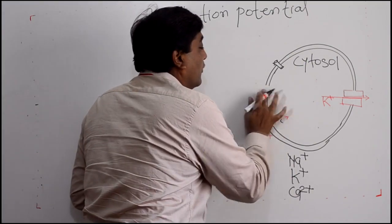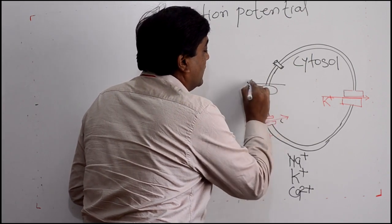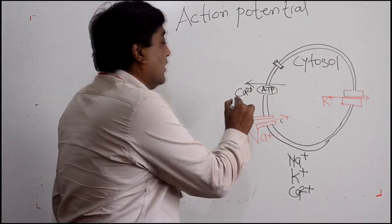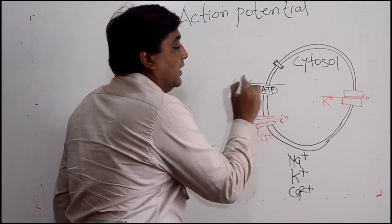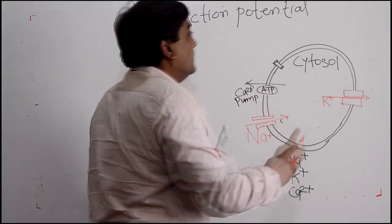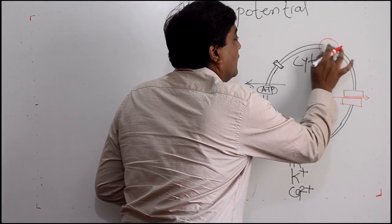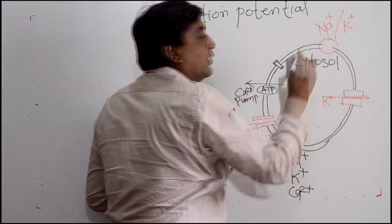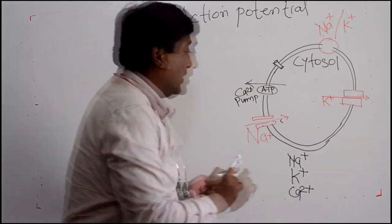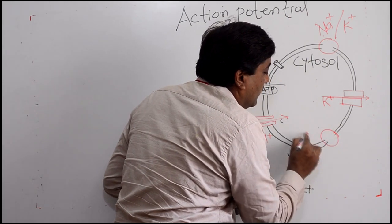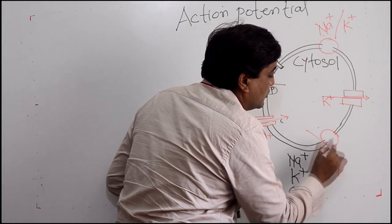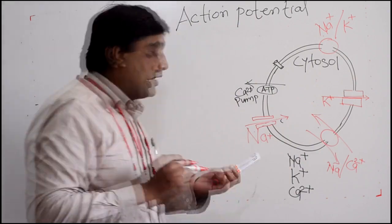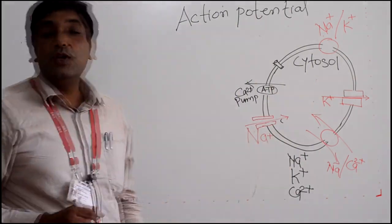Beyond that, we have additional transporters, especially for calcium, where we use ATP — called the calcium ATPase or calcium pump — an energy-requiring process. We also have transporters that exchange sodium and potassium, called the sodium-potassium pump or sodium-potassium exchanger. There is also a transporter that exchanges sodium with calcium. These are the transport mechanisms of the cell.